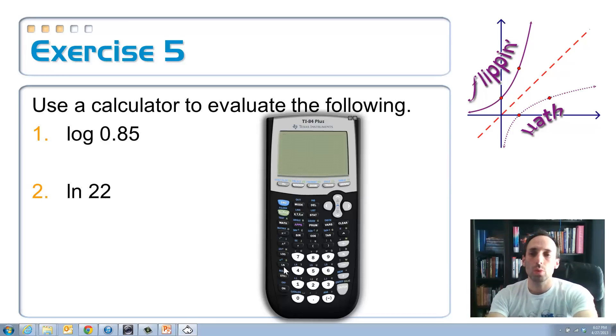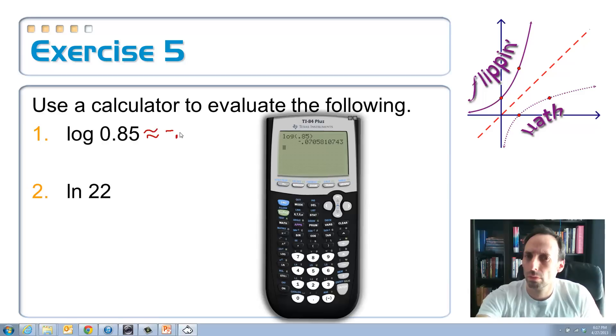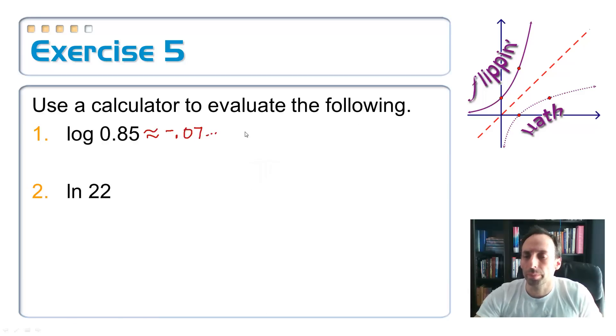The first one, question number one, we want to find the common log of 0.85. So log, it opens up parentheses, type in your 0.85, close those parentheses, and hit enter. So I get negative 0.07, blah, blah, blah. So this is approximately equal to negative 0.07. What does that mean? Well, what that means is, this is a base of 10, remember, it means 10 to the negative 0.07 something power is equal to 0.85.